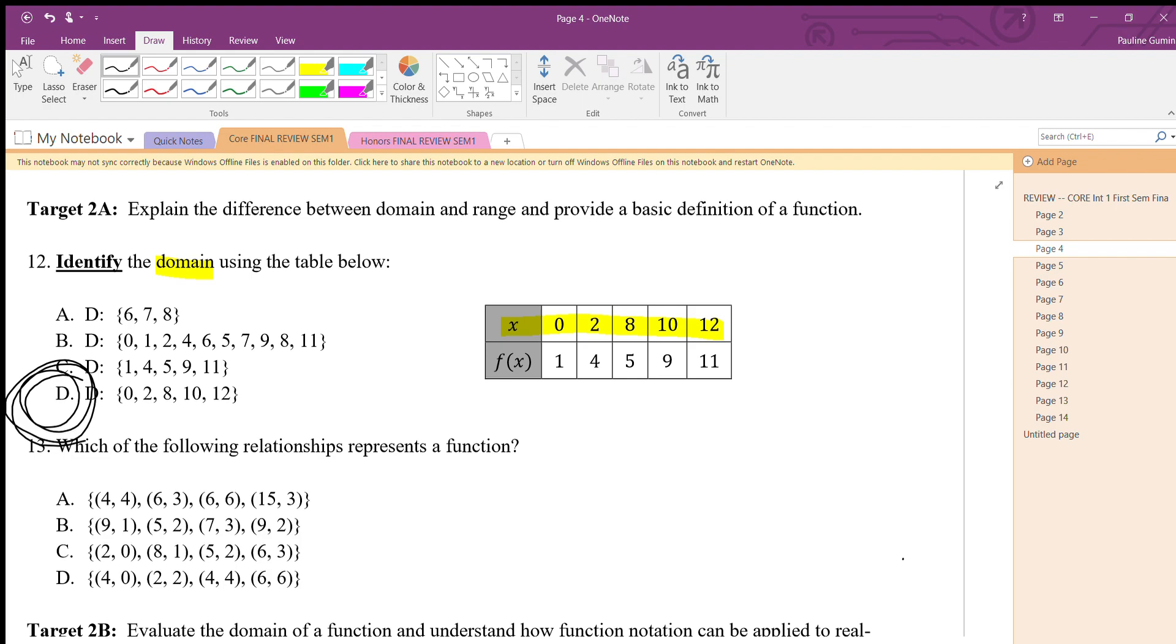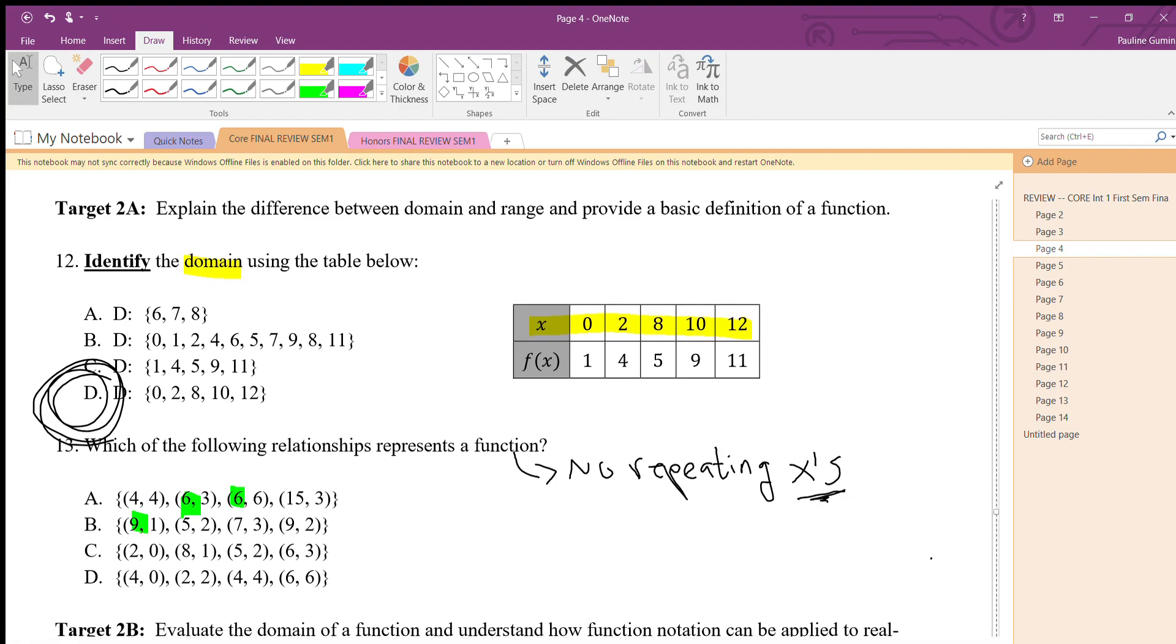In number 13, you are asked to identify which relationship represents a function. In this case, you have to remember a function is special - it has no repeating x's. Let's take a look at the options. In letter A, I see two repeating sixes. In letter B, I see two repeating nines. In letter C, I see no repetition - perfect, that's our answer.